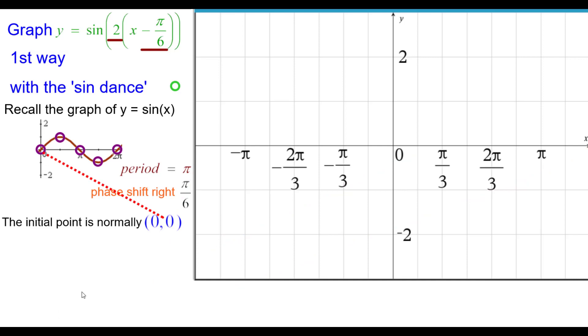The initial point on the sine function is normally at the origin. It will be shifted to the right pi over 6, 0. The y-coordinates are not affected by these parameters, so we'll start at pi over 6, 0.